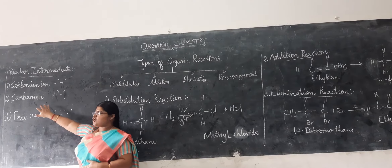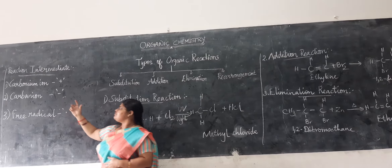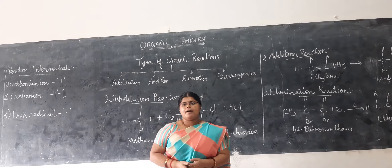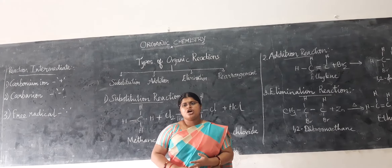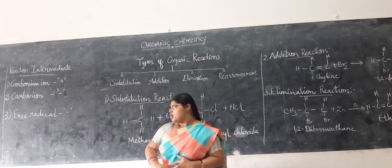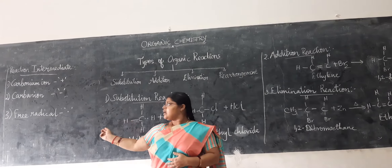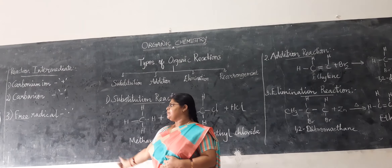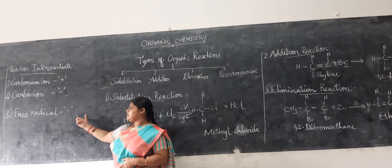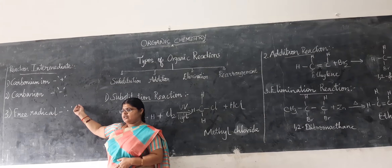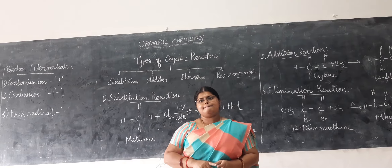Carbanions are negatively charged carbon atoms. Their stability order is the opposite: primary is more stable than secondary, and secondary is more stable than tertiary. Examples include ethyl and methyl carbanions. The next intermediate is the free radical, in which the carbon atom has an unpaired electron, represented by a dot. Examples include ethyl free radical and methyl free radical.